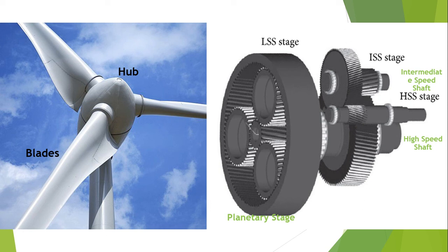The rotor in the low speed stage turns the low speed shaft at rotations of about 30 to 60 revolutions per minute. Because wind speed increases with height, taller towers enable turbines to capture more kinetic energy that the wind carries, and thus they are capable of generating more electricity.